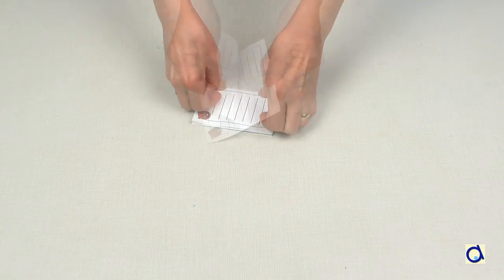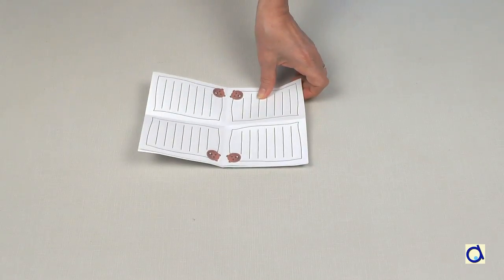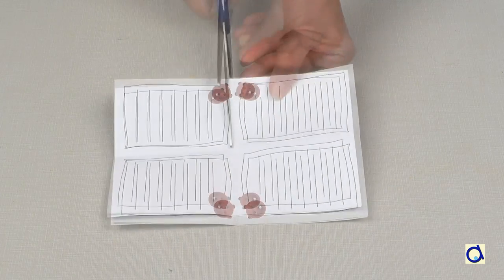Unfold the sheet until you return to the stage where the sheet is folded in half. Take a pair of scissors and cut a slit along the center fold, stopping at the cross fold.